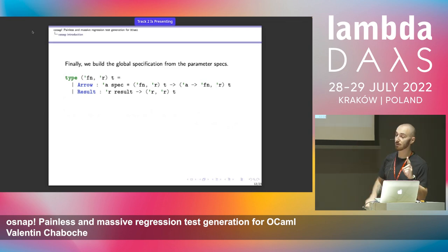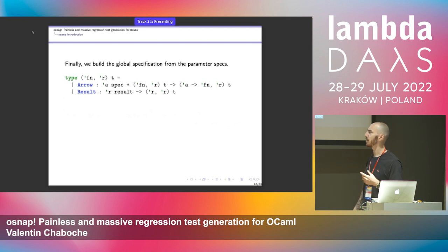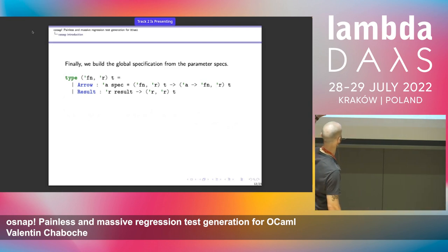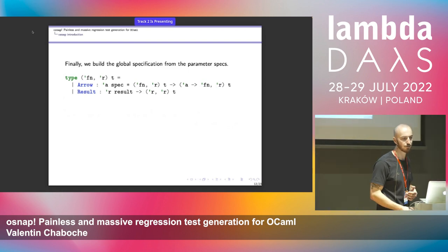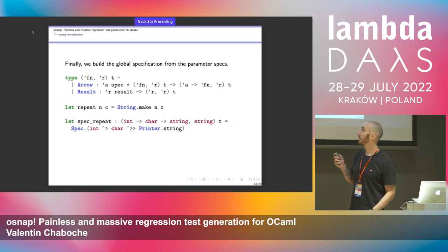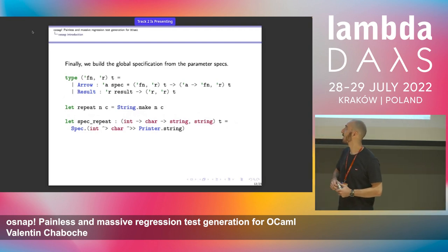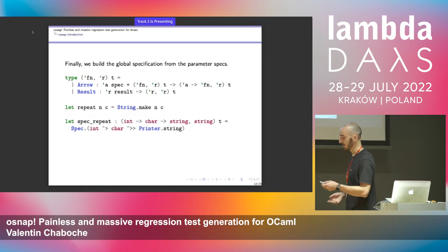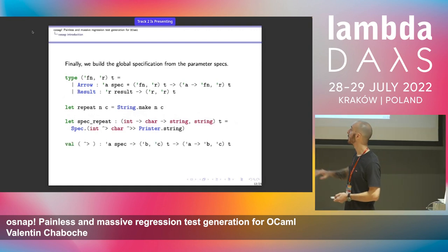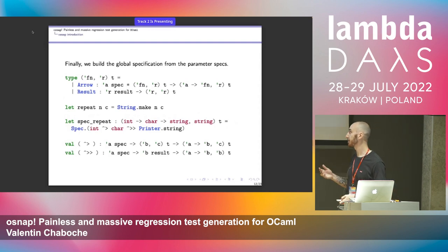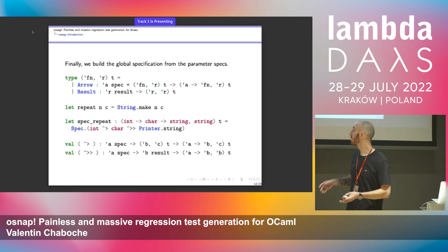It's a fancier type I'll explain shortly, but mainly you have two cases: either the recursive case where you combine specification into specification, or eventually you finish with the result. With a simple example of a function 'repeat' that repeats n times a character — the spec is an integer for n, into a spec of a character for c, and finally a printer of string. I use two infix combinators: one to combine specs, and a final combinator that takes a specification and a result.